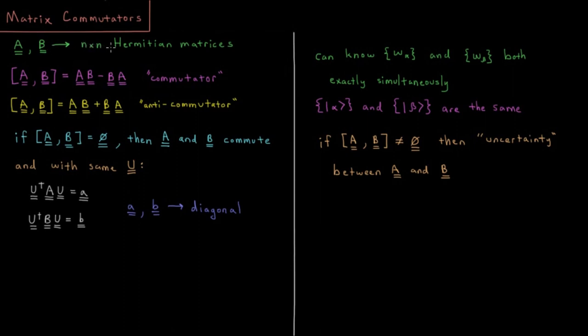These are both n by n Hermitian matrices. So in that case we can define the following kind of matrix where we have a bracket A comma B and this is equal to A times B minus B times A.